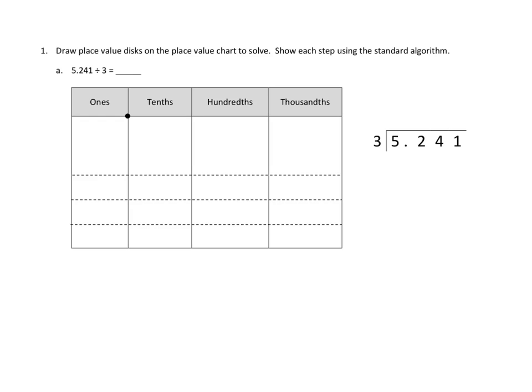We're going to first put our number, 5 and 241 thousandths, into our place value chart. So we place 5 ones, 2 tenths, 4 hundredths, and 1 thousandth as dots on the chart.